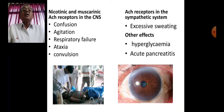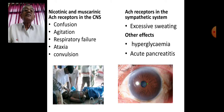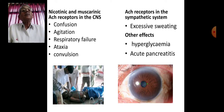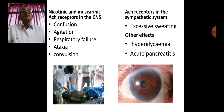The nicotinic and muscarinic acetylcholine receptors in the CNS also get affected, resulting in confusion, agitation, respiratory failure, ataxia, and convulsions. The acetylcholine receptors in the sympathetic system also get affected, resulting in excessive sweating, hyperglycemia, and acute pancreatitis.